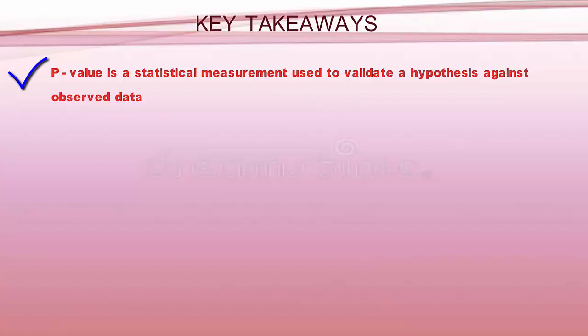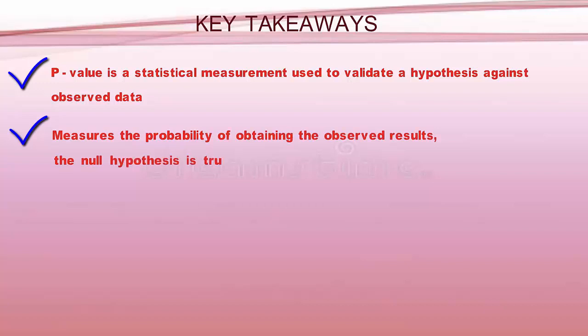Some key aspects of P-value: 1. A P-value is a statistical measurement used to validate a hypothesis against observed data. 2. A P-value measures the probability of obtaining the observed results, assuming that the null hypothesis is true.